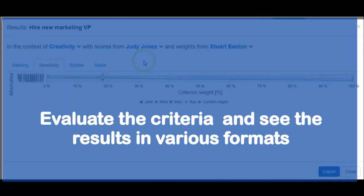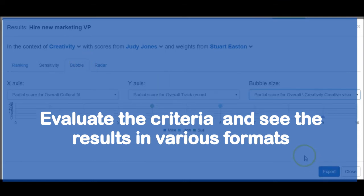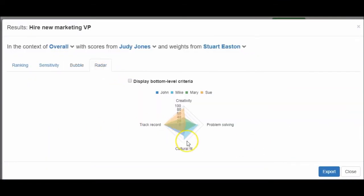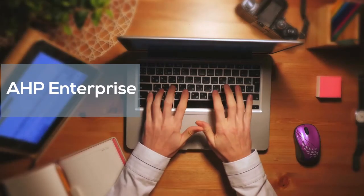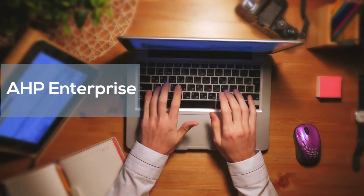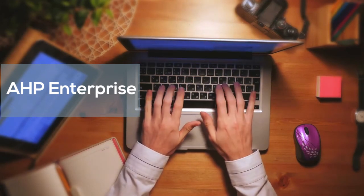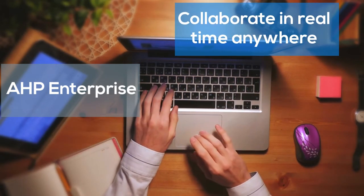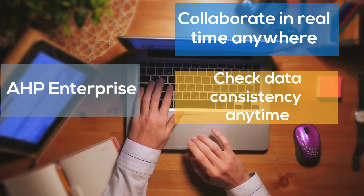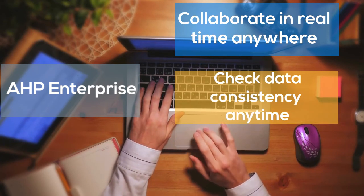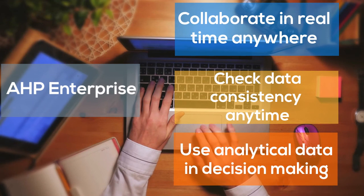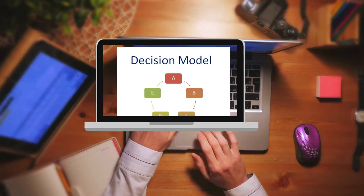Depending on which subscription level you sign up for, you'll be able to do sensitivity analysis, see radar plots, and even create powerful bubble charts on the fly. With our enterprise version, we take AHP to a new higher level. Online interactive meetings let your team collaborate in real time while checking consistency. We give you more analytics, and you can even import data about your alternatives and use those data directly in your decision model.